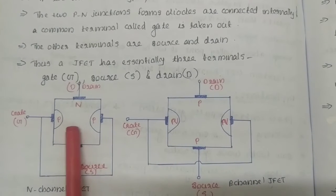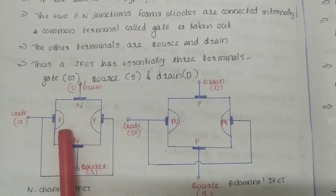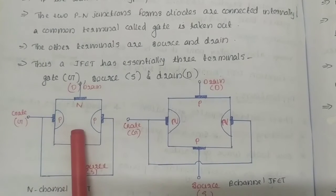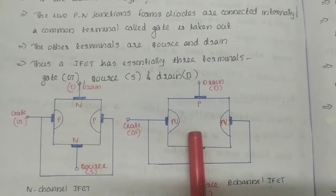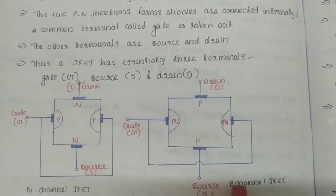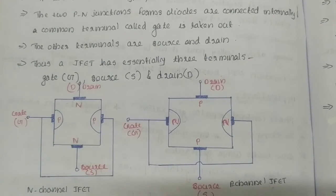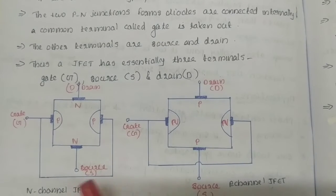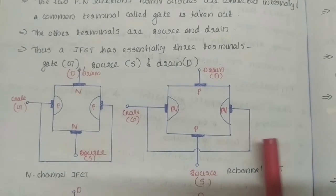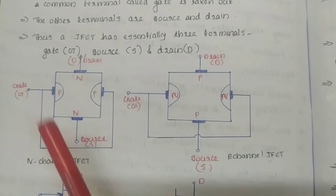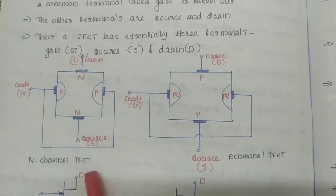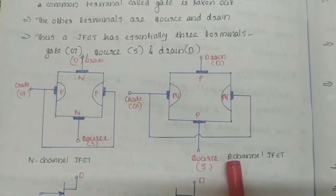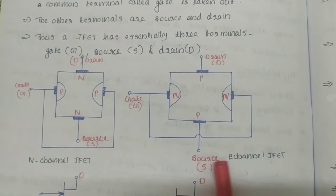If the channel is made up of N-type material, then it is called N-channel JFET. If the channel is made up of P-type material, then it is called P-channel JFET. So N-type material means N-channel JFET, and P-type material means P-channel JFET.